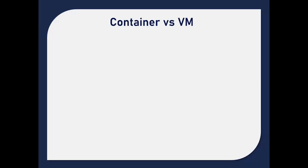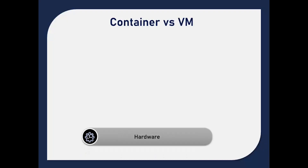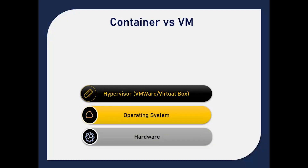This might seem similar to the concept of a virtual machine, but there is a specific difference. We have already seen the infrastructure for a container. Now let us see how virtual machines actually operate. The underlying scenario is the same: hardware, then the operating system. On top of the OS, rather than a container engine, we have something called a hypervisor. There are two kinds of hypervisors — Type 1 and Type 2. Type 1 hypervisors interact with the hardware directly, whereas Type 2 hypervisors, for example VMware or VirtualBox, make use of the operating system.